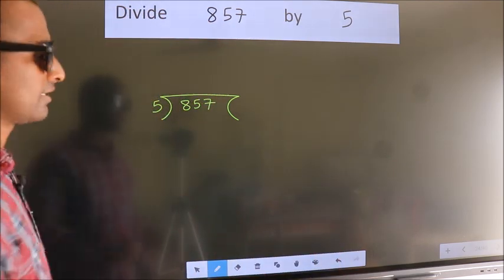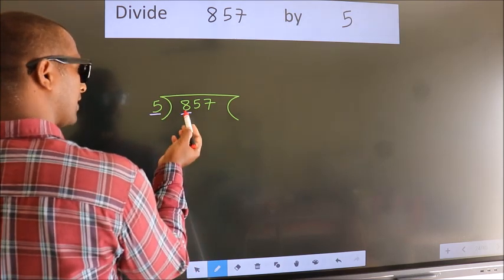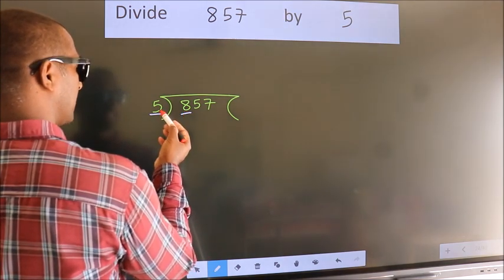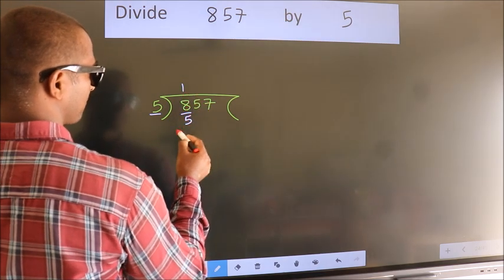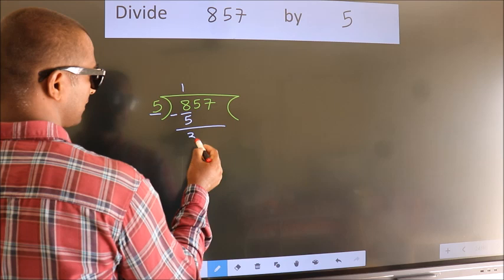Next, here we have 8, here 5. A number close to 8 in 5 table is 5 once 5. Now we should subtract. We get 3.